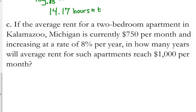All right, last word problem here. If the average rent for a two-bedroom apartment in Kalamazoo, Michigan, and you may wonder where did Kalamazoo come from? That's where your textbook was written, so there's a problem being from your textbook. It is currently $750 per month and increasing at a rate of 8% per year. In how many years will average rent for such apartments reach $1,000 per month?